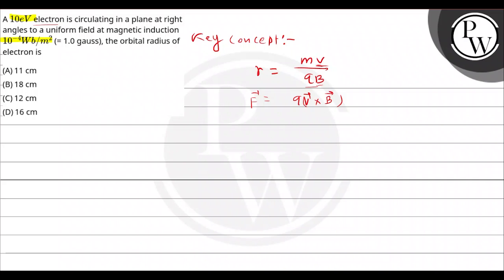The kinetic energy is given as 10 electron volts, so 10 into 1.6 into 10 to the power minus 19 joules. This will be equal to half m_e into v squared, where v is the speed. This much amount of energy is equal to half m_e into v squared, which is the kinetic energy.